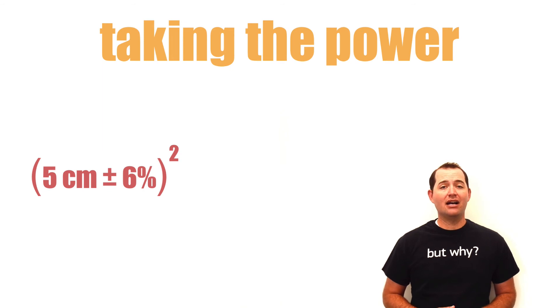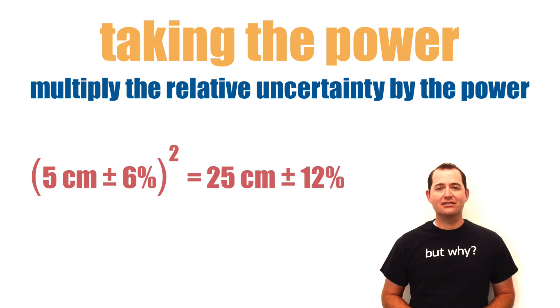If you are taking the power of a value or measurement with an uncertainty, then you will multiply the relative uncertainty by the number in the power.